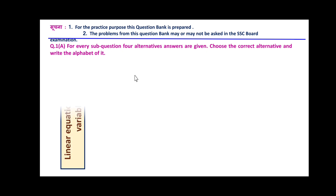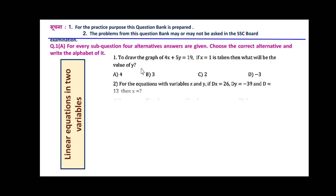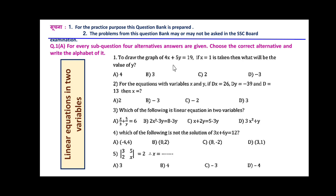We will discuss all the problems from Mathematics Part 1. The first topic is linear equations in two variables. The first problem: to draw the graph of 4x + 5y = 19, if x = 1 is taken, then by substituting the value of 1 in this equation, you will get 3. So the option is B.